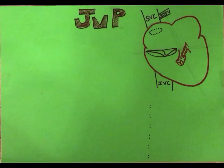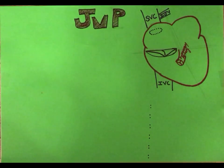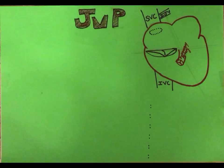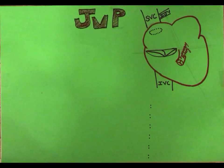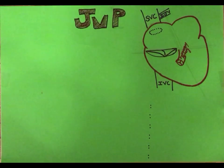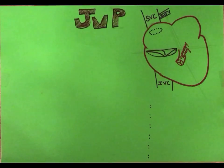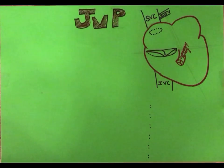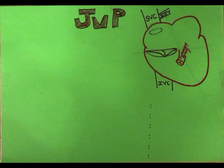Why do we use the internal jugular vein rather than the external jugular vein? This is because the internal jugular vein is a valveless vein, whereas the external jugular contains valves, which can reflect a false idea about the pressure inside the right atrium.